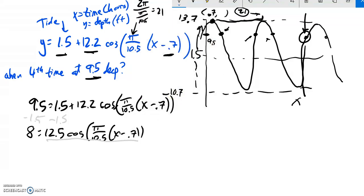And if I do that, then I've got 8 equals 12.2 cosine pi over 10.5 times x minus 0.7. Wait, it's not 12.5, it's 12.2. I messed up, I copied it down wrong. I hope you weren't wondering why that turned into a 5.